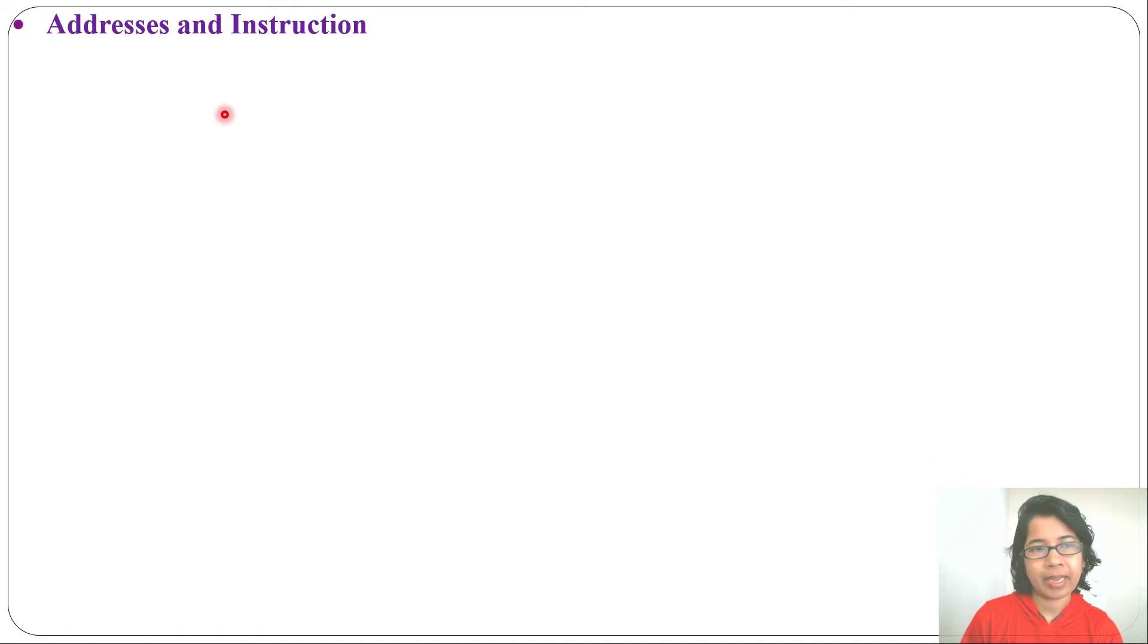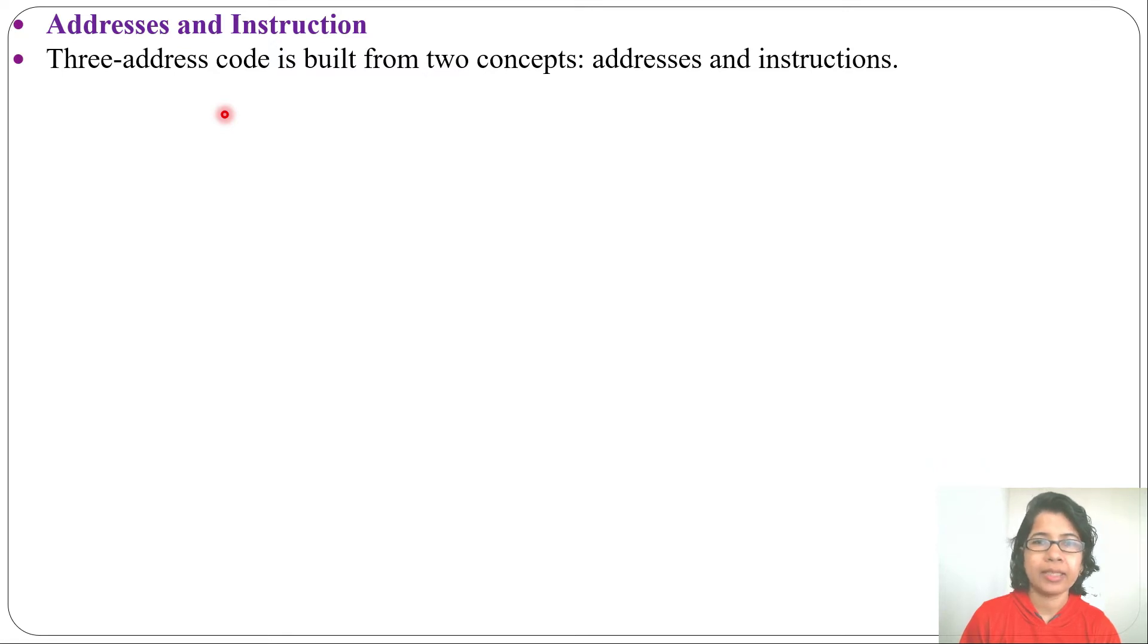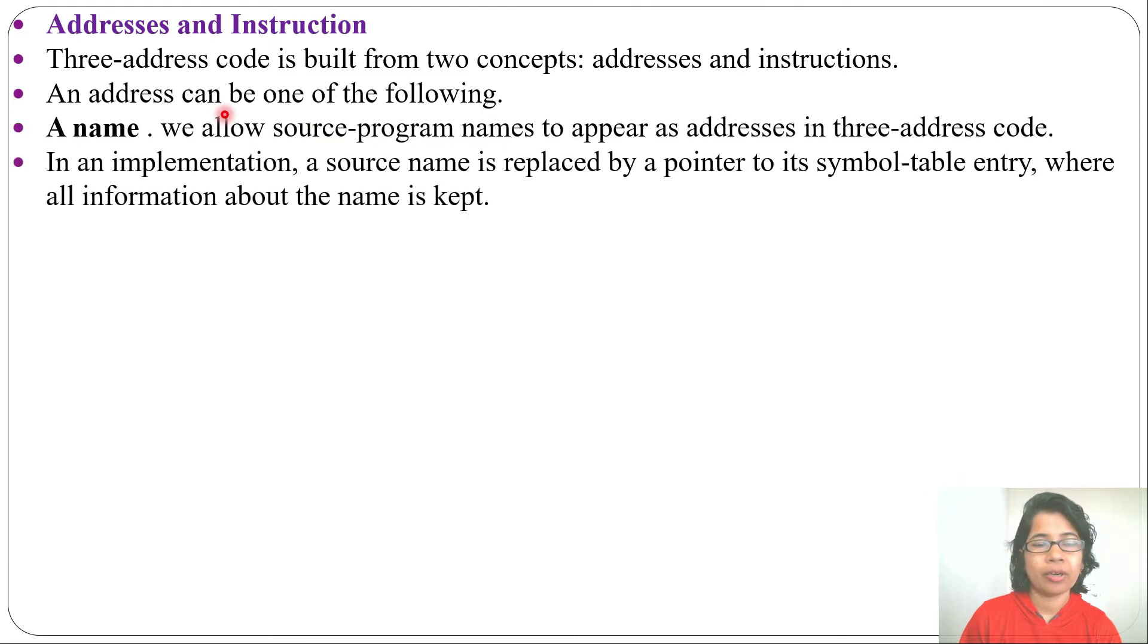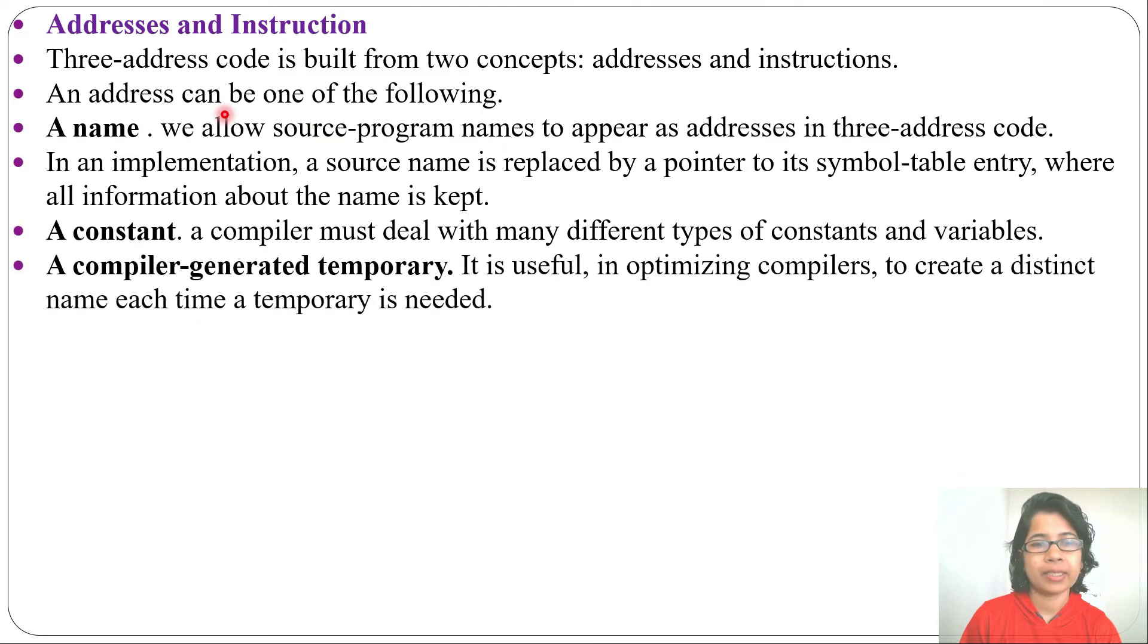Next, addresses and instruction. Three-address code is built from two concepts: one is address, another is instruction. Addresses can be one of the following: it can be either a name or a constant or compiler-generated temporary. We can directly write source program names to appear as addresses in three-address code, but in implementation a source name is replaced by a pointer to its symbol table entry.